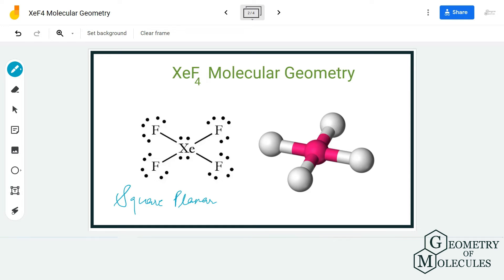If you look at its molecular geometry in 3D, it appears to be square planar. But let's confirm it by using the steric number and the AXN notation.